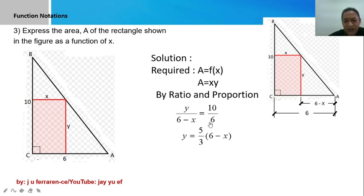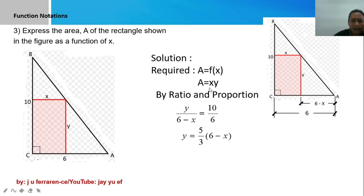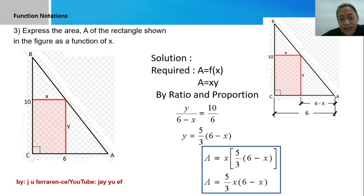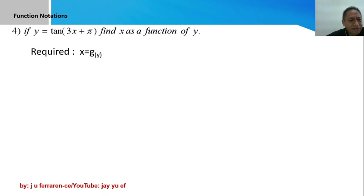Since 10 and 6 have a common factor of 2, we can reduce that to 5 over 3. Solving for y: y is equal to 5 over 3 times the quantity 6 minus x. Since y is now expressed in terms of x, we substitute back into the area formula A equals x times y, giving us A equals 5 over 3 times x times the quantity 6 minus x.